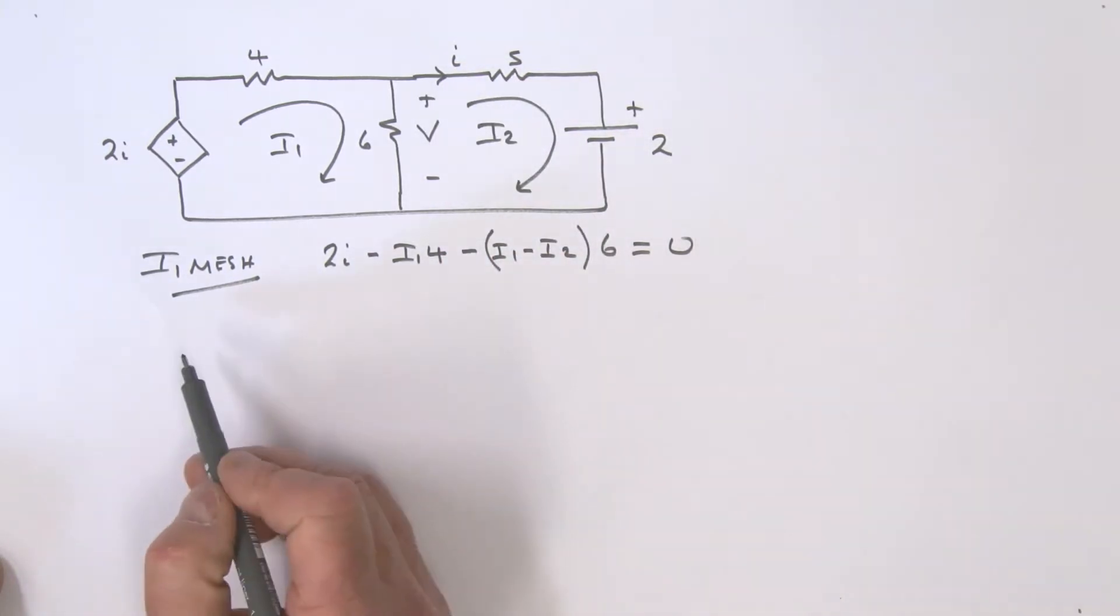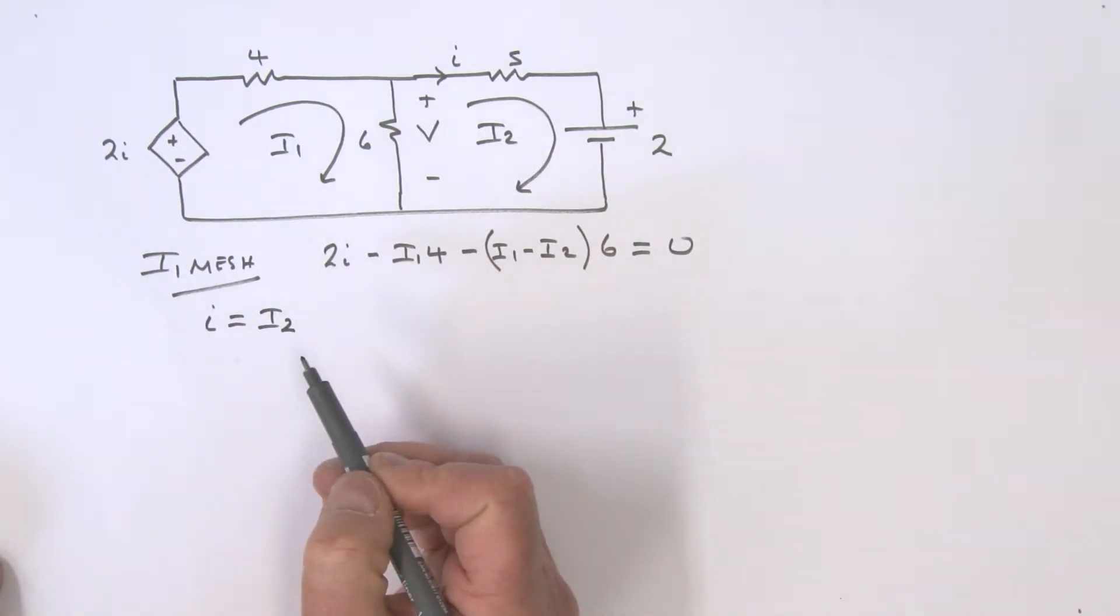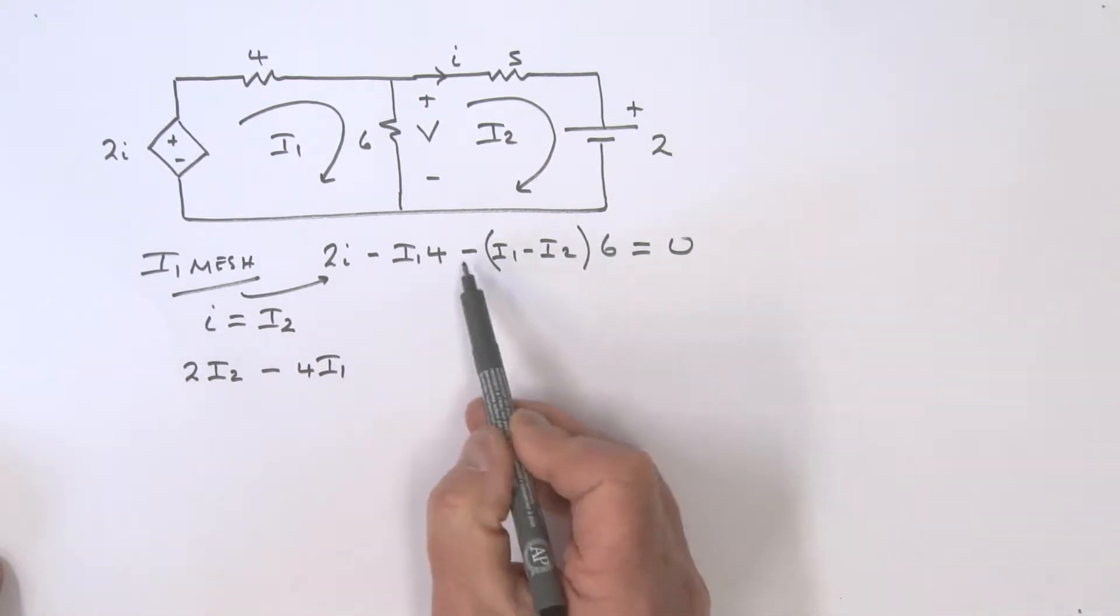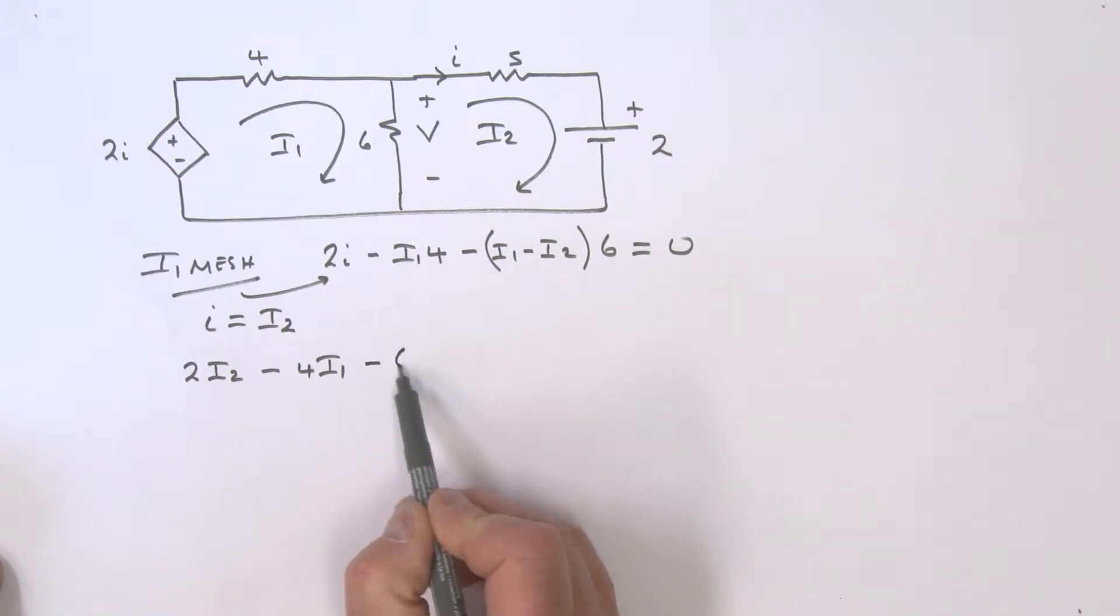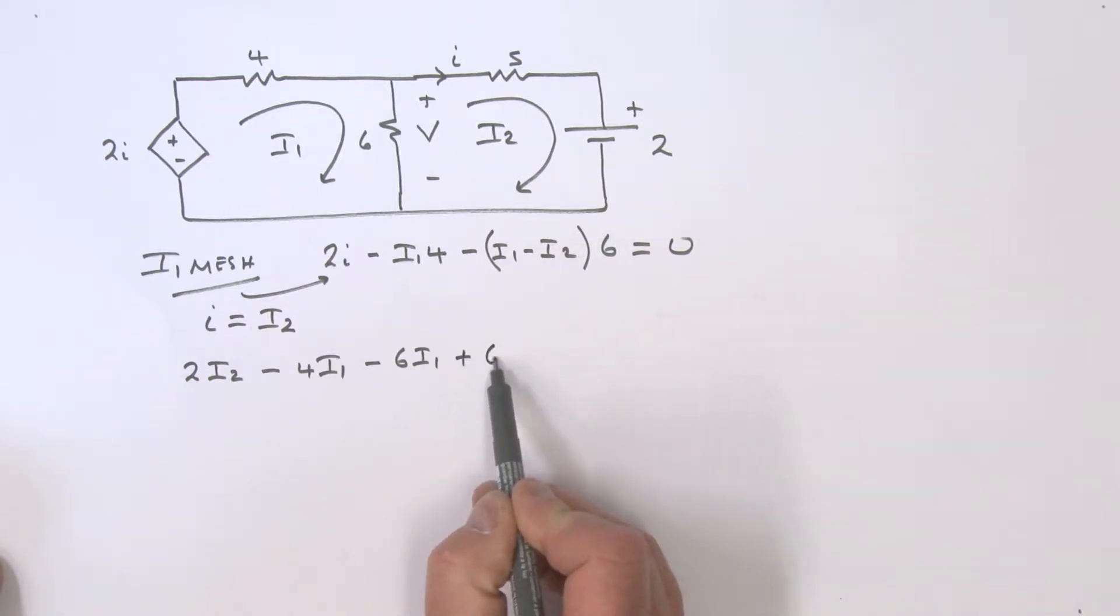We can put this into here. If we do that, we've got 2 I2, and then it's a minus 4 I1, and then just opening this up that's a minus 6 I1, minus times a minus is a plus, so that's plus 6 I2, and all of that is equal to zero.